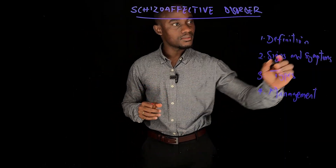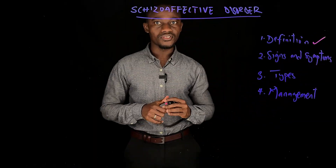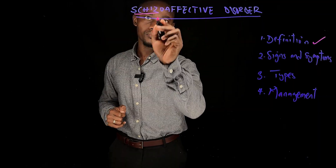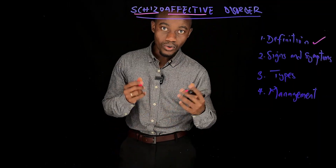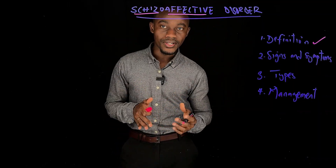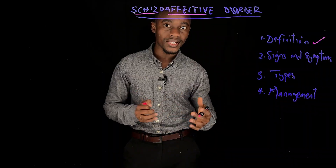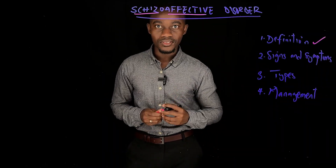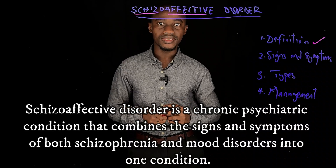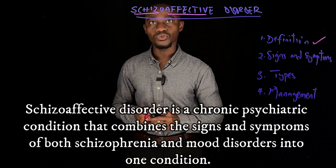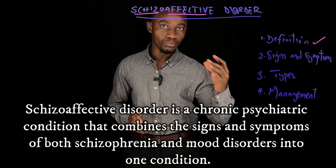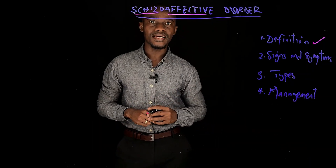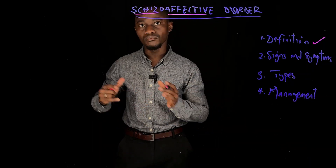We will start by defining schizoaffective disorder. The word schizoaffective comes from two words: schizo and affective. Schizo means schizophrenia and affective is another word for mood disorders. So schizoaffective disorder is a chronic psychiatric condition that combines the signs and symptoms of schizophrenia and mood disorders — in other words, schizoaffective disorder is schizophrenia plus mood disorders.